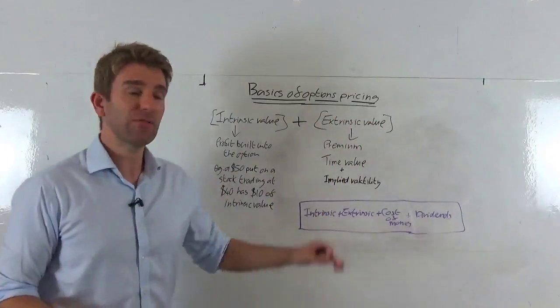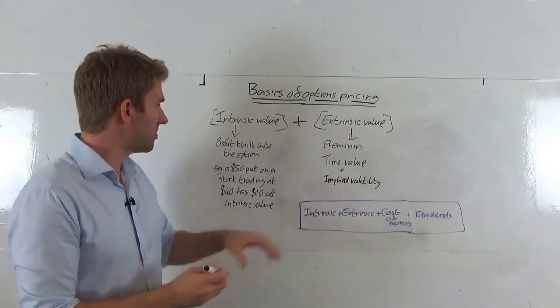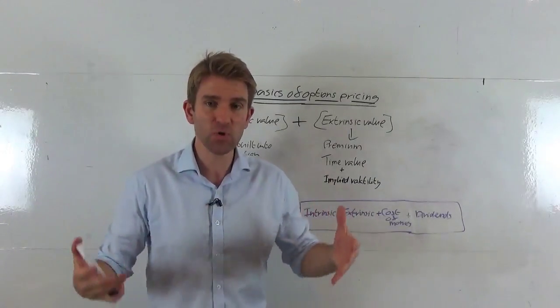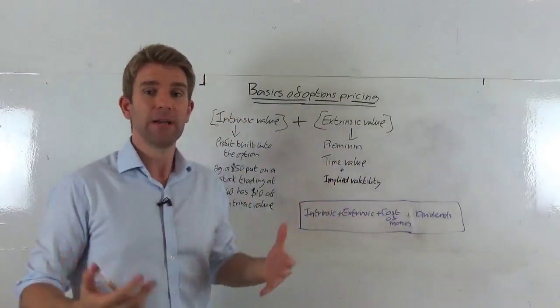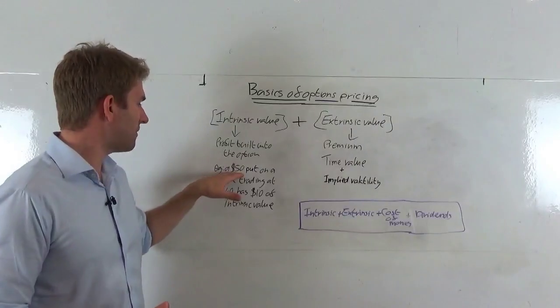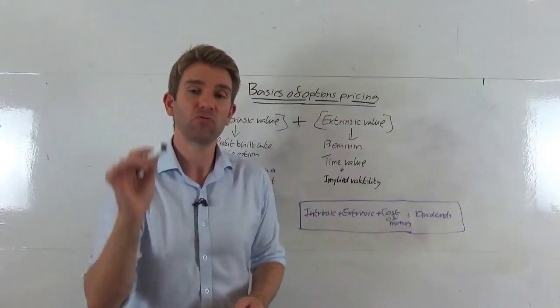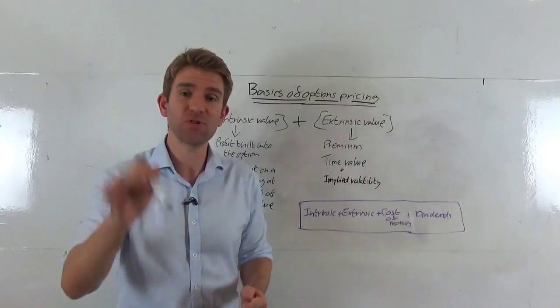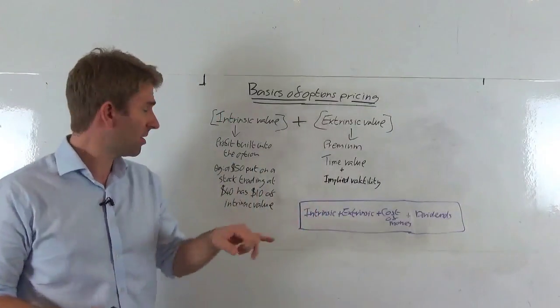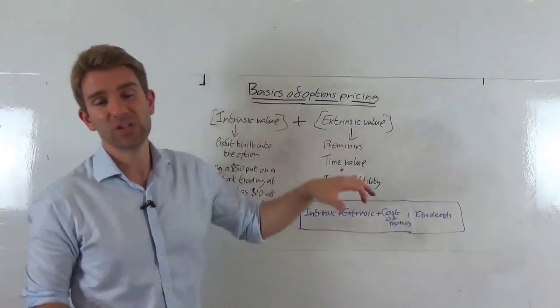Let's look at the intrinsic value first. Intrinsic value is the profit that's built into the option already. For example, if we had a 50 put option—and don't forget, a put option is the right but not the obligation to sell those shares—so sell shares in that company at 50 at a specific point in time. It's a bearish view on the market.